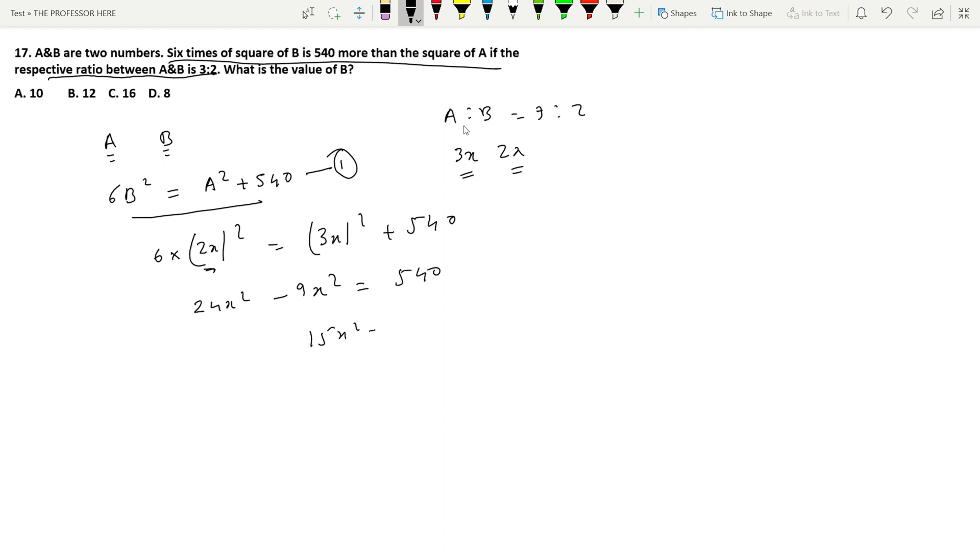So 15x² = 540. x² = 540 ÷ 15 = 36. So x = √36 = 6. To find the value of b, you have to find 2x. 2x = 2 × 6 = 12.